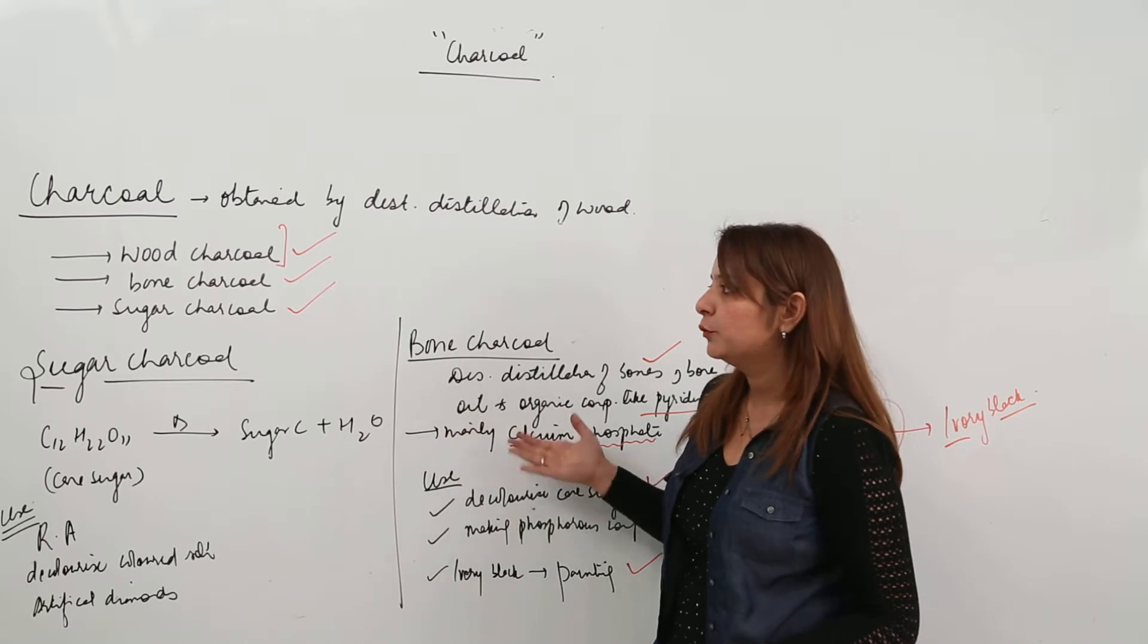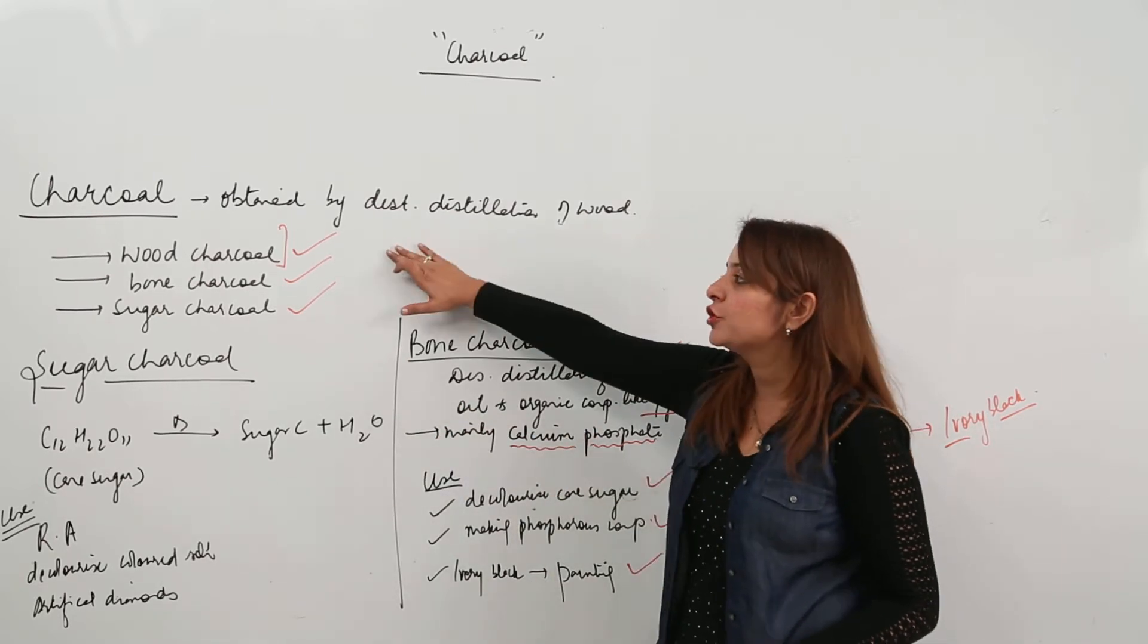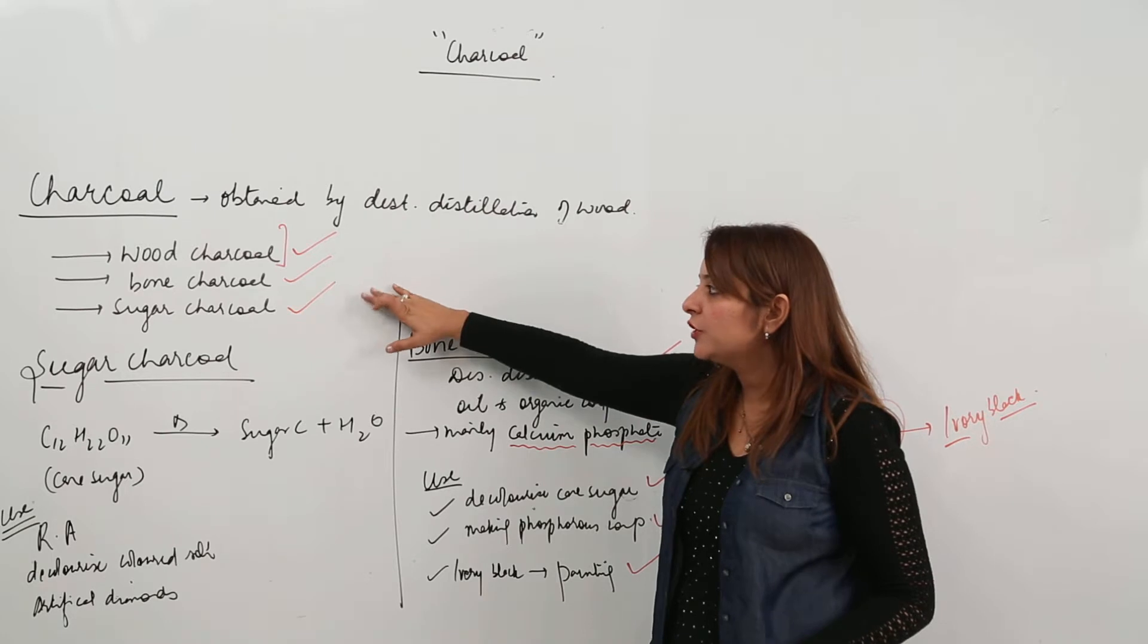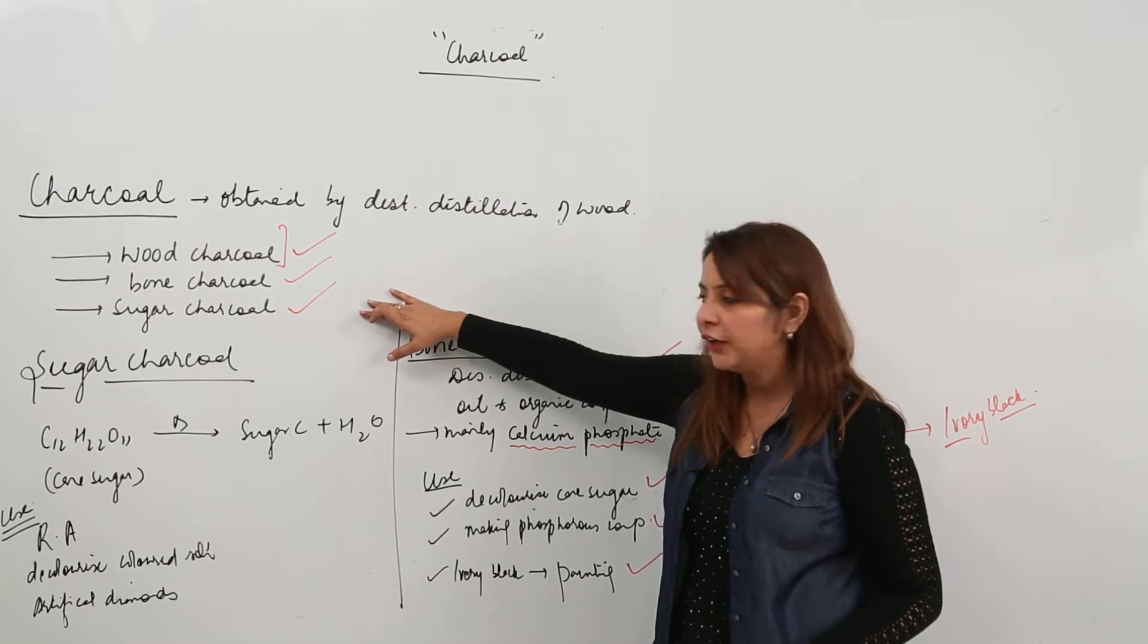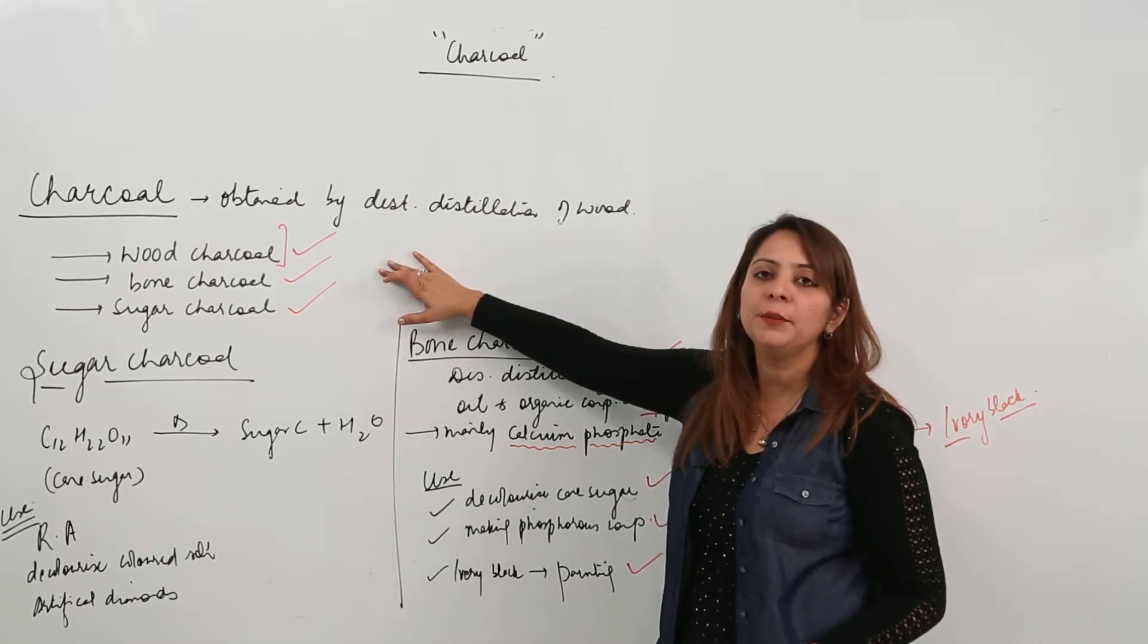So this is all about the sugar and the bone charcoal. I think you got it. Wood charcoal will be obtained by destructive distillation of wood. Sugar charcoal will be obtained by destructive distillation of cane sugar. And bone charcoal will be obtained by the destructive distillation of bone oil,